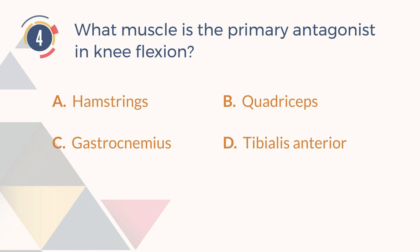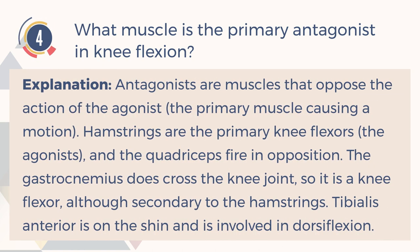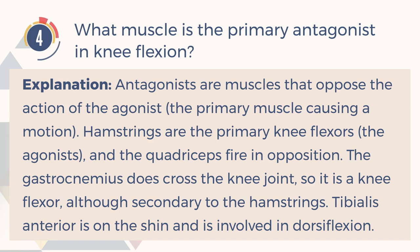The correct answer is B. Quadriceps. Explanation: Antagonists are muscles that oppose the action of the agonist, the primary muscle causing a motion. Hamstrings are the primary knee flexors, the agonists, and the quadriceps fire in opposition. The gastrocnemius does cross the knee joint, so it is a knee flexor, although secondary to the hamstrings. Tibialis anterior is on the shin and is involved in dorsiflexion.